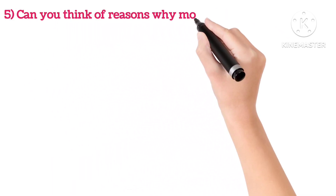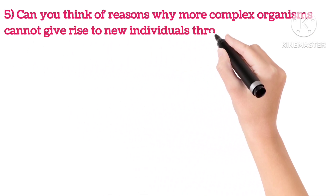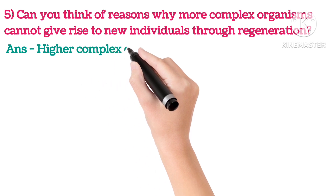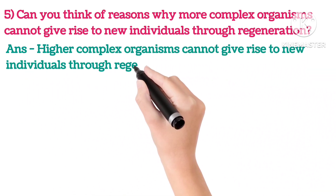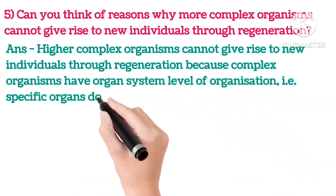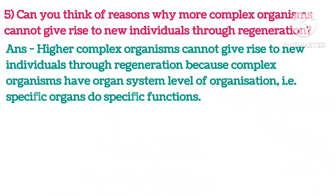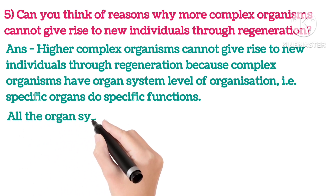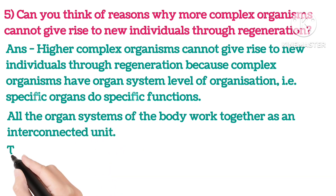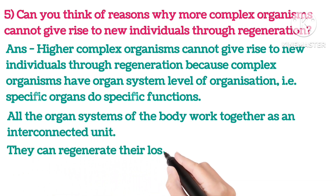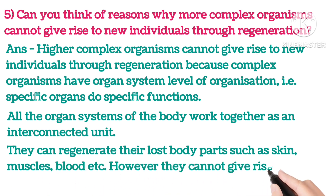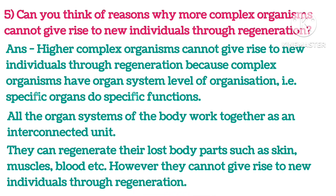Fifth: Can you think of a reason why more complex organisms cannot give rise to new individuals through regeneration? Higher complex organisms cannot give rise to new individuals through regeneration because they have organ-system level of organisation — specific organs perform specific functions, and all organ systems work together as an interconnected unit. They can regenerate lost body parts such as skin, muscles, and blood, but they cannot give rise to a new individual through regeneration.